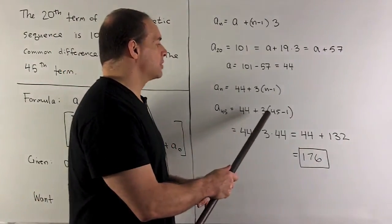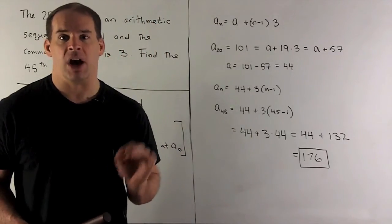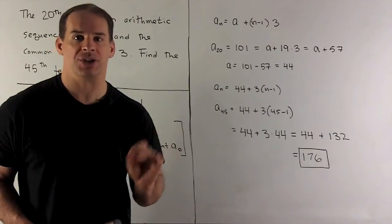plus 3 times (45 minus 1), or 44 plus 3 times 44. That gives me 176, so a_45 is 176.